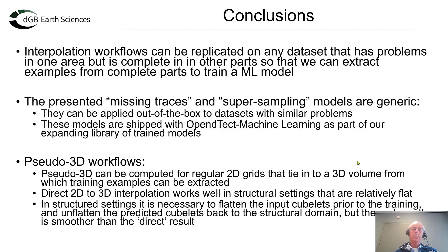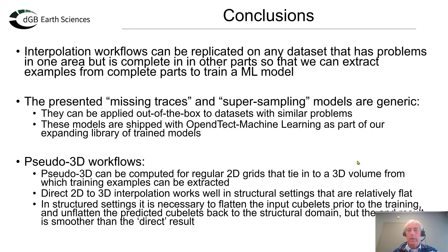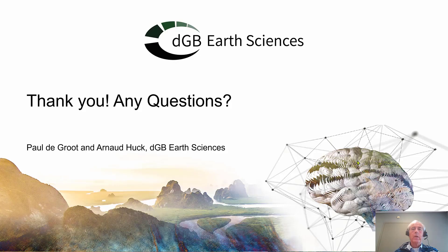The two pseudo-3D workflows show that you can compute pseudo-3D from regular 2D grids that tie into a 3D volume, using the 3D volume to create training sets for the infilling. The direct approach works well in structural settings that are relatively flat, while if there is more structure in the data, it is necessary to first flatten using the horizon cube technique and then unflatten after the machine learning model has been trained on the flattened data. Thank you for your attention, and I'm ready for any questions.